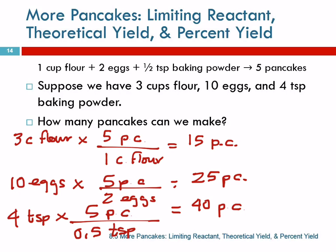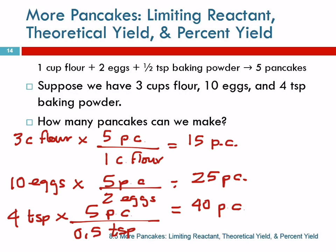We recognize, because we understand the process of making pancakes, that we can only make 15. Because when we make 15 pancakes, we run out of flour, and you can't continue to make pancakes if you have no more flour. When we do problems like this with chemical reactions, students do all sorts of crazy things. They'll do this calculation beautifully, and then they'll add all these up and say, 'I can make 80 pancakes.' And that's absolutely ridiculous, isn't it? This is how many pancakes we can make.